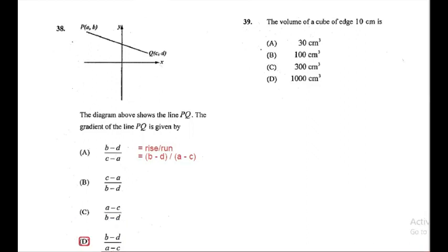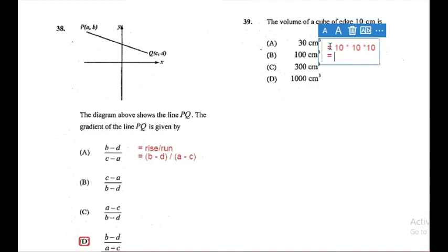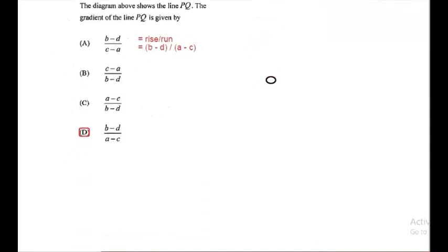Question 39: the volume of a cube of edge 10 centimeters. Remember volume equals edge cubed, so it is 10 times 10 times 10, which equals 1000 cubic centimeters. Our answer is D. An easy one mark, guys — you can do it!